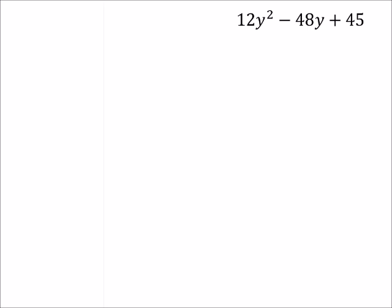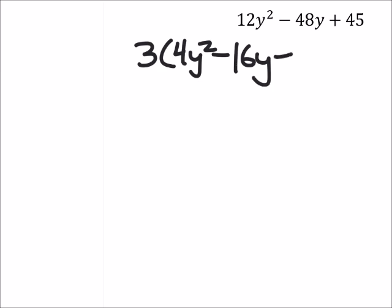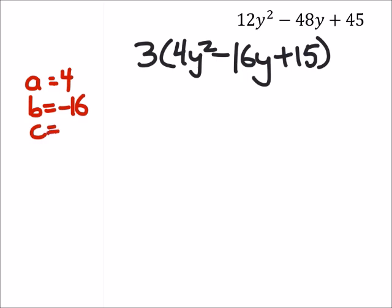So if we factor out a 3 from each of these, then I got a 3 and a 4y squared minus 16y plus 15. Now we're just focusing on the inside of the parentheses, and the a value on the inside of the parentheses is 4, the b value is negative 16, and the c value is a positive 15.